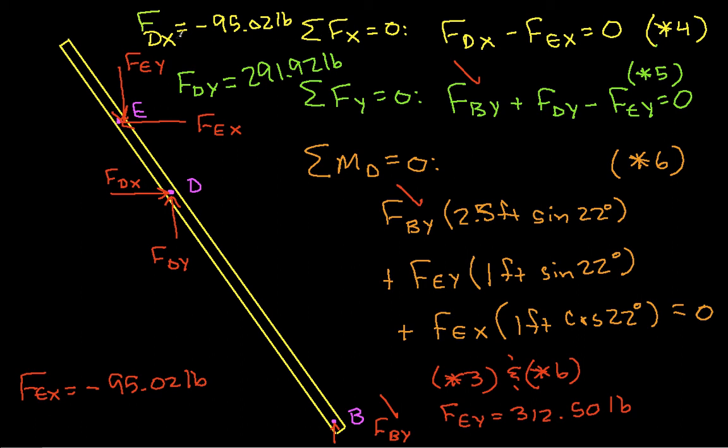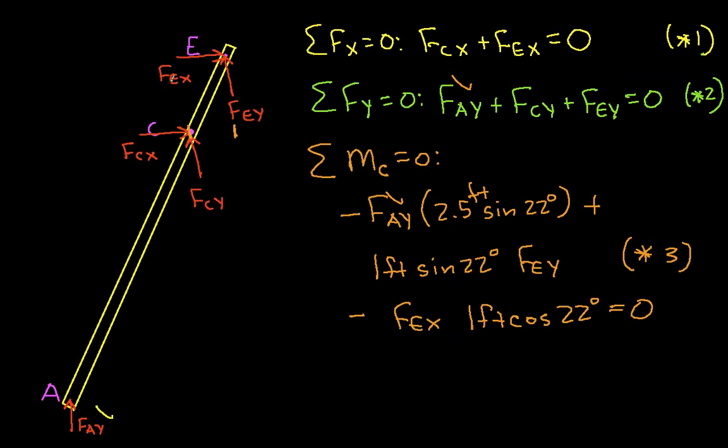Okay, so we have FDX and FDY. The only things we need now are FCX and FCY. So we go back here and see that FCX plus FEX equals zero. So FCX is minus FEX, which is 95.02 pounds.